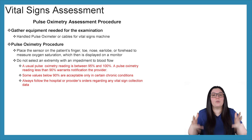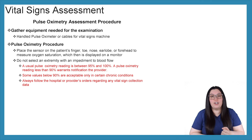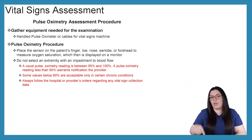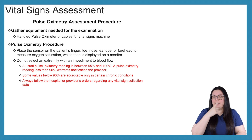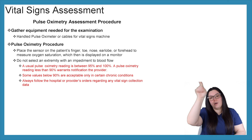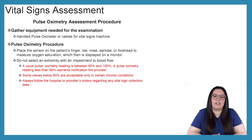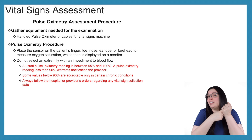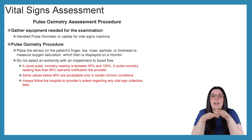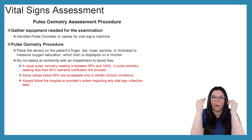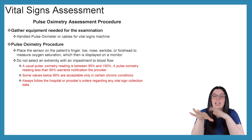Pulse oximetry procedure: we're going to begin by placing the sensor on the patient's finger, toe, nose, earlobe, or forehead to measure oxygen saturation, which is then displayed on the monitor. If you have the finger probe you're only going to be able to place it on the finger, but if you have the SpO2 monitoring connected to the machine you've got a lot more options.